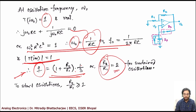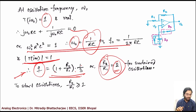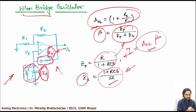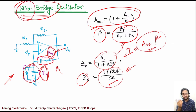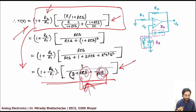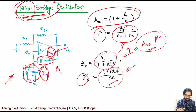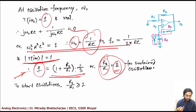For sustained oscillation R2/R1 must be equal to 2, or greater than or equal to 2 for start-up. In both oscillators — phase shift and Wien bridge — an RC network is used in the feedback. The Wien bridge oscillator is named after Wien, who proposed this circuit.